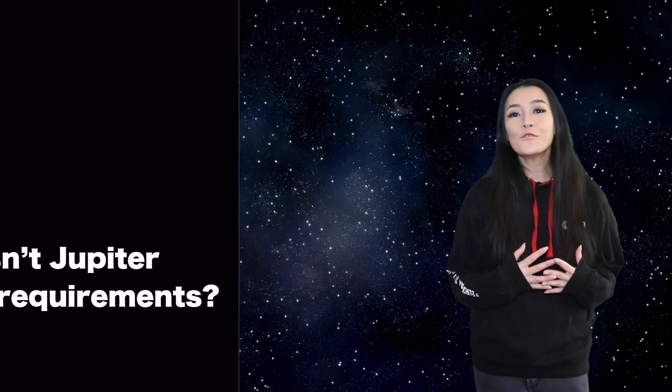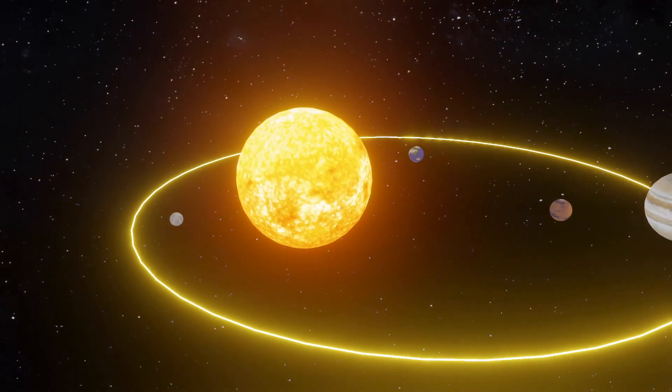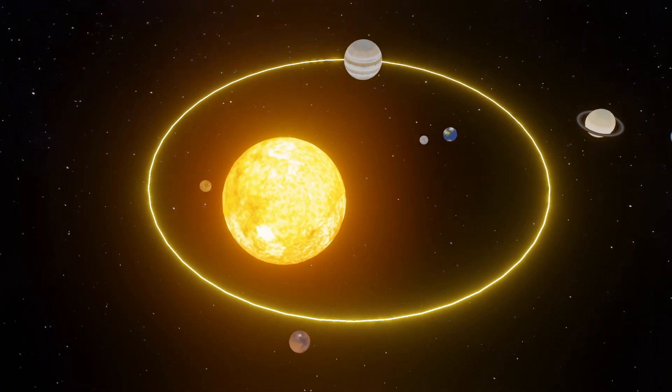Well that's all very interesting but I'm sure you already know all about that. So let's get to the more important stuff. How does Jupiter not meet those requirements? Well it turns out that Jupiter does not orbit around the Sun.